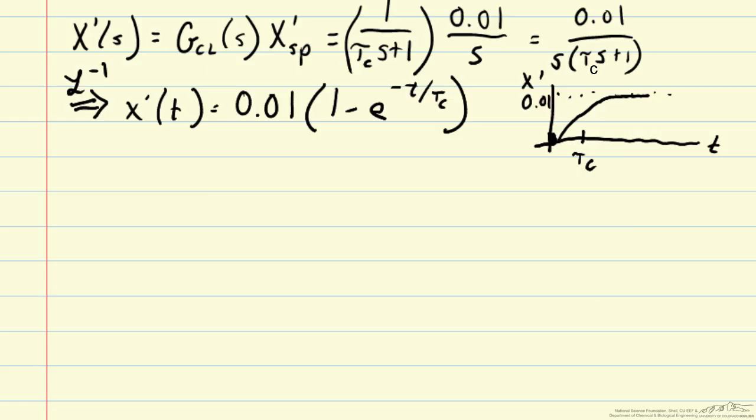So it's great to be able to specify our closed-loop behavior, but then the next question is how do we actually achieve that?